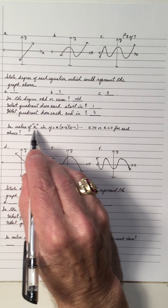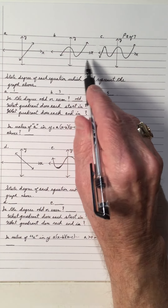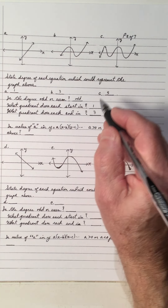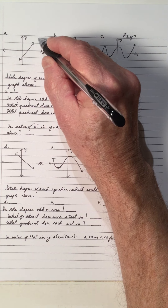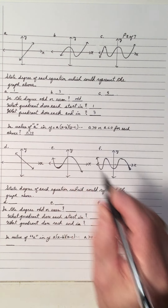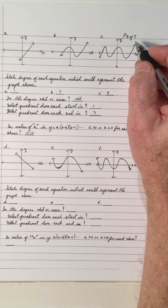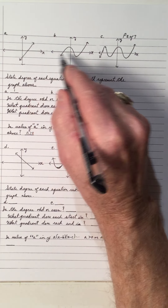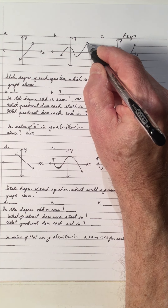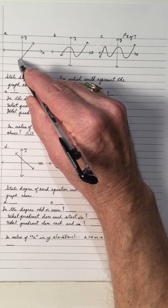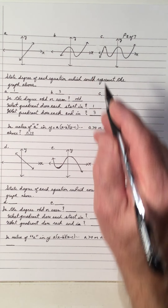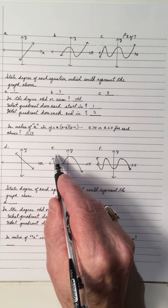Is the value of A in each equation greater than zero or less than zero? Notice, because it's going up to the right, the value of A is greater than zero. These are all odd degrees, so they all start in quadrant one and end in quadrant three — that's when A is positive.